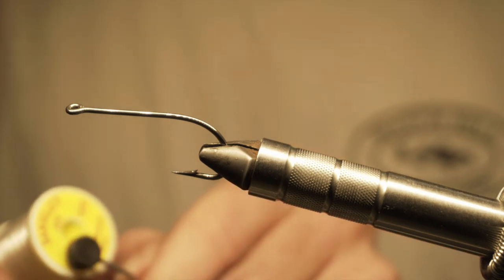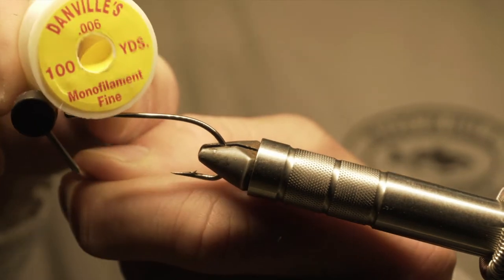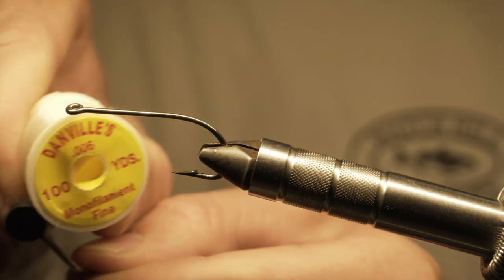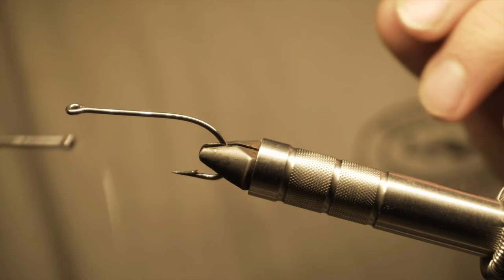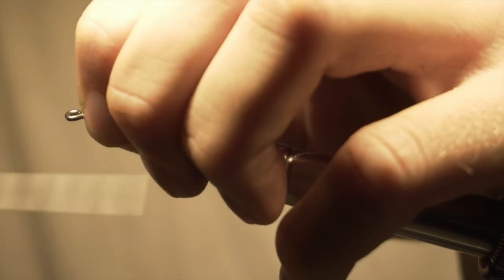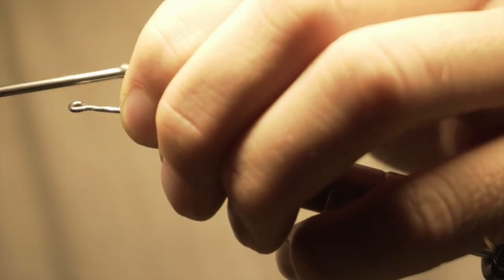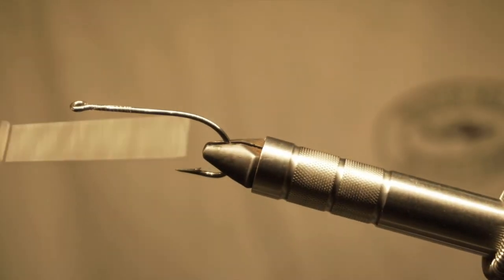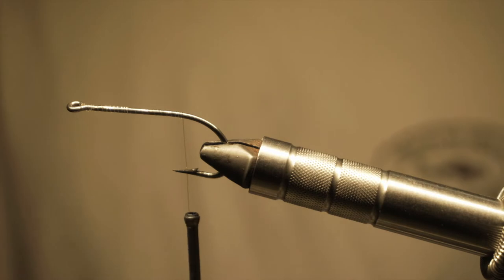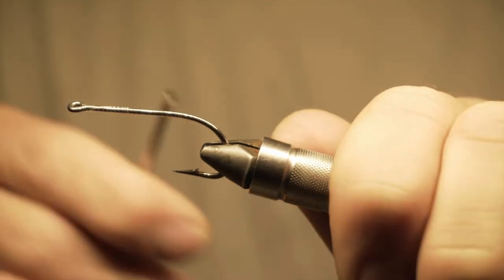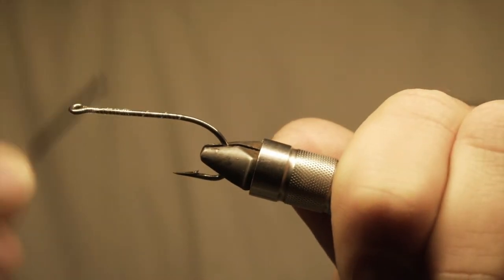The thread that we're going to be using is this Danville monofilament thread. I like to use this thread because it's clear and we're going to be tying over a lot of our materials, so it gives us better color through the thread. I'm going to start out just tying on that thread right to the bend of the hook there, and then wrap it up to form a base.